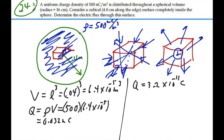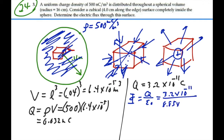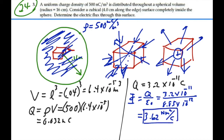To find the net flux due to this total charge, net flux equals the charge enclosed over epsilon naught. That is 3.2 times 10 to the minus 11 over 8.85 times 10 to the minus 12, which gives us the net flux through this cube: 3.62 Newton meters squared per coulomb. It's positive because the charge is positive and the flux is all exiting from inside the cube. That is our net flux through this surface.